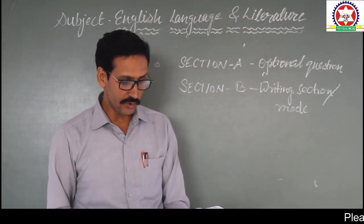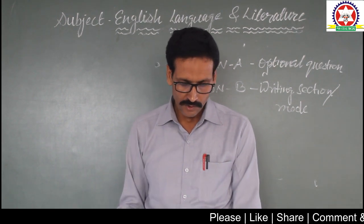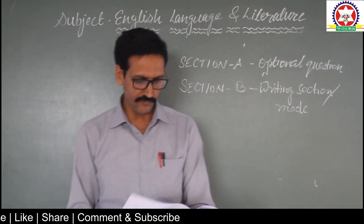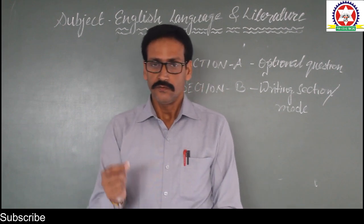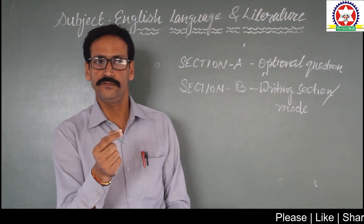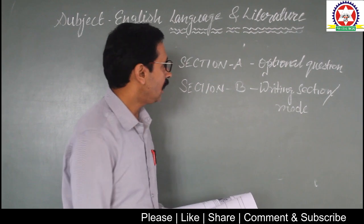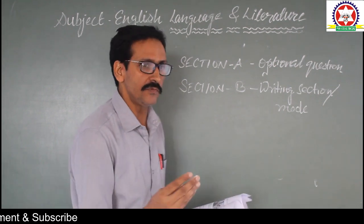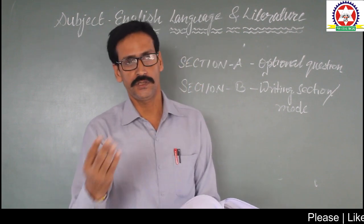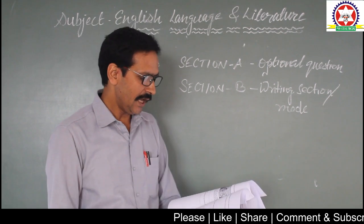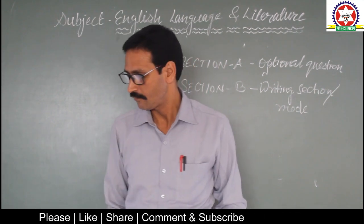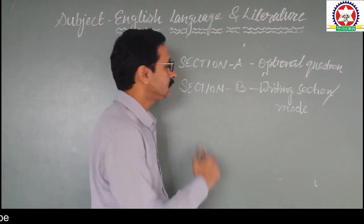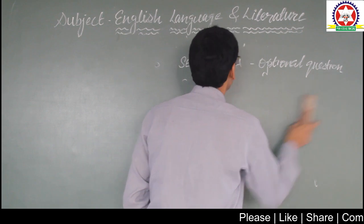Section A basically has about 6 questions including some grammar. You will get all these 6 questions in optional form, including grammatical parts. The grammar portion covers your syllabus topics like articles, prepositions, conjunctions, and other grammatical terms. Please pay attention as I go through Section A, which contains the optional parts.